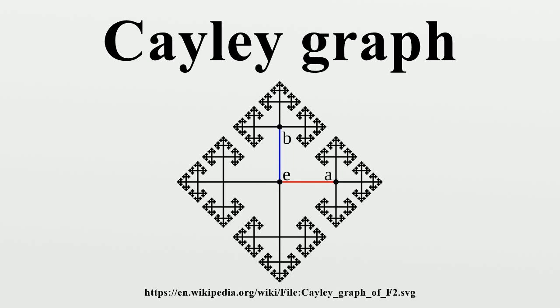History. The Cayley graph was first considered for finite groups by Arthur Cayley in 1878. Max Dehn in his unpublished lectures on group theory from 1909-10 reintroduced Cayley graphs under the name Gruppenbild, which led to the geometric group theory of today. His most important application was the solution of the word problem for the fundamental group of surfaces with genus 2, which is equivalent to the topological problem of deciding which closed curves on the surface contract to a point.